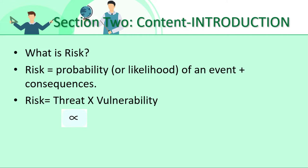If there is only threat and no vulnerability, or if there is only vulnerability and no threat, then there is no risk. When there is a threat and vulnerability both coupled together, then only risk comes into the picture. Similarly, if there is a probability but no consequences, or consequences but no probability, then again there is no risk.